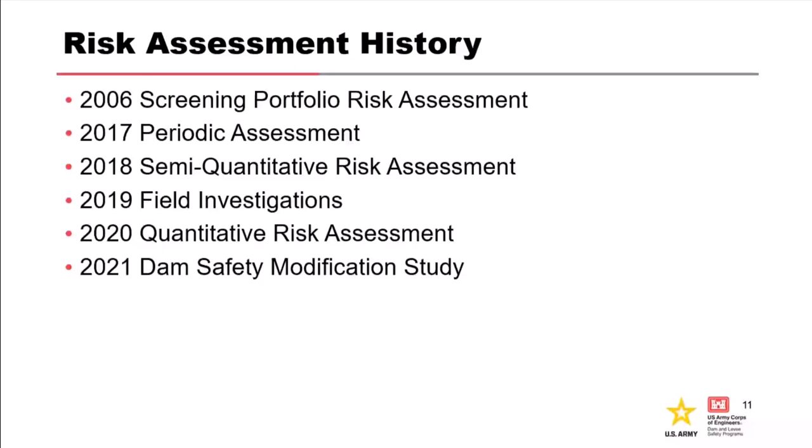In 2006, the main risk driver was through the esker on the right abutment. A periodic assessment was done in 2017 — I think it was a DSAC 2. Then we started a site quantitative risk assessment, which began as an SQRA, moved into a field investigation and an IES, did the quantitative assessment in 2020, and then a dam safety modification study in 2021.